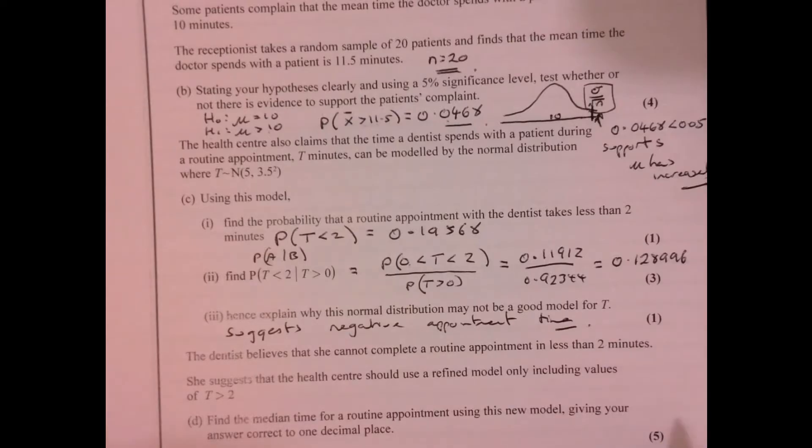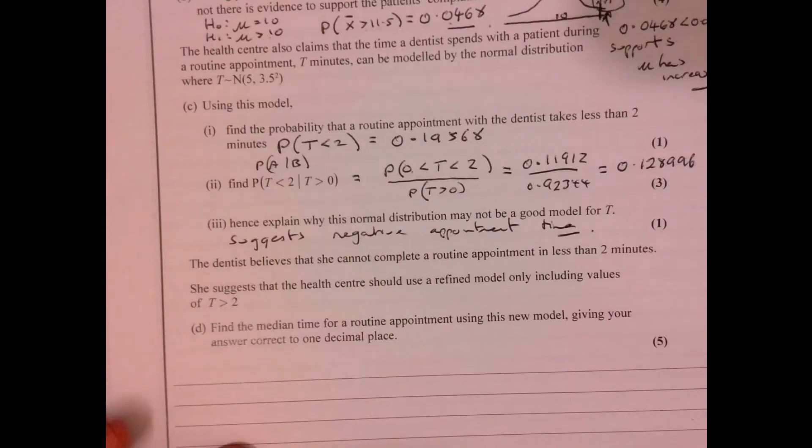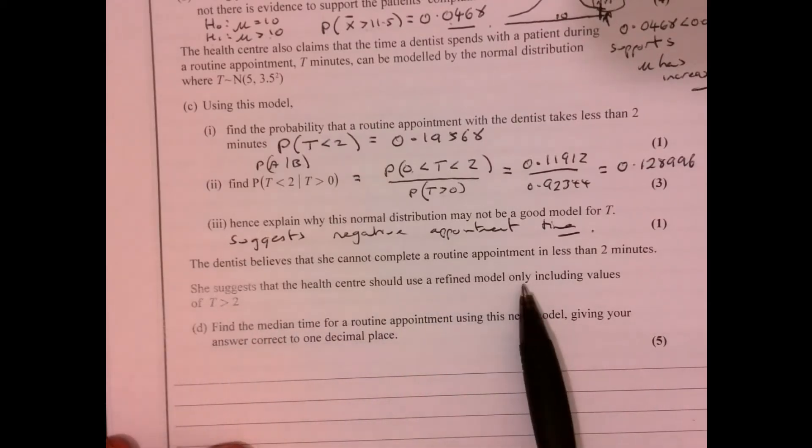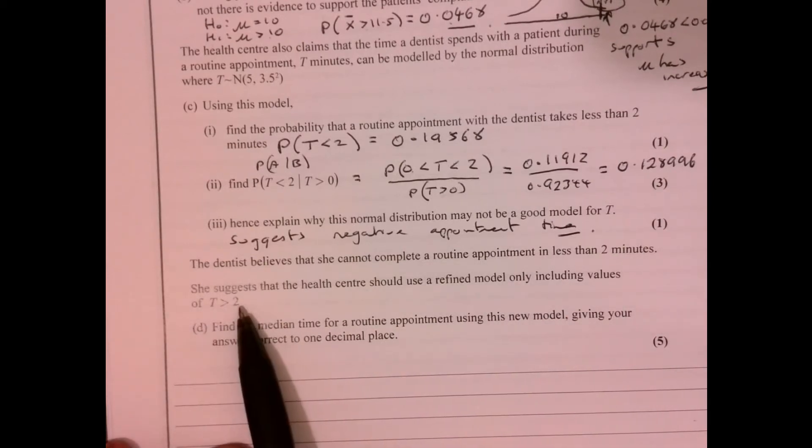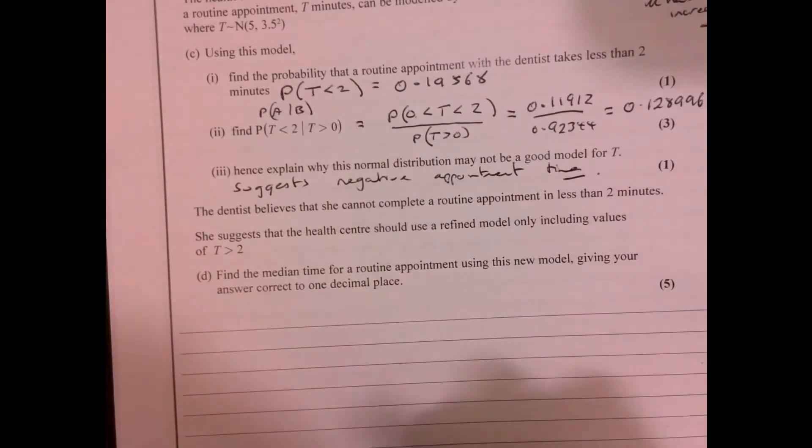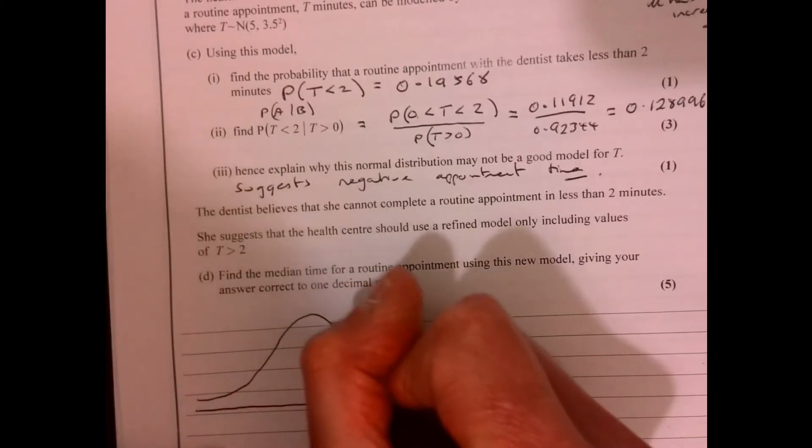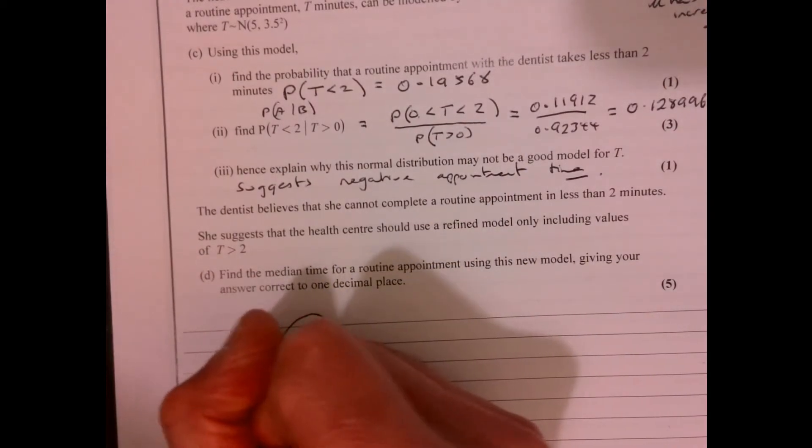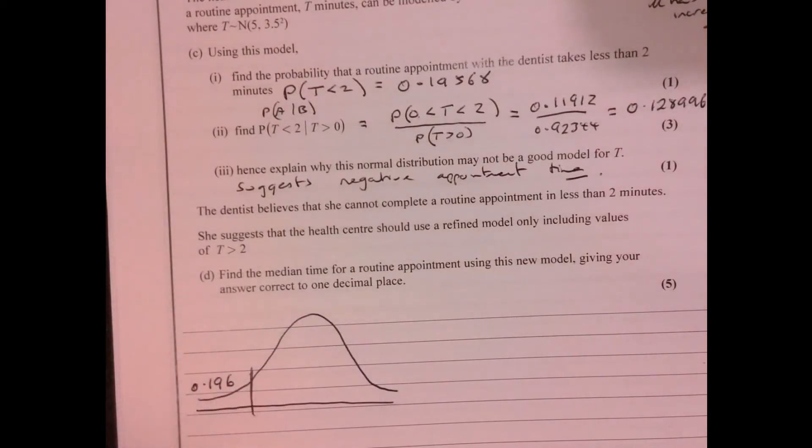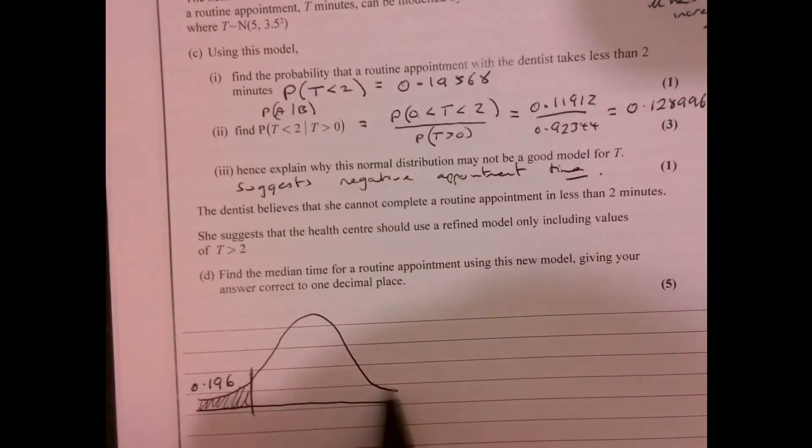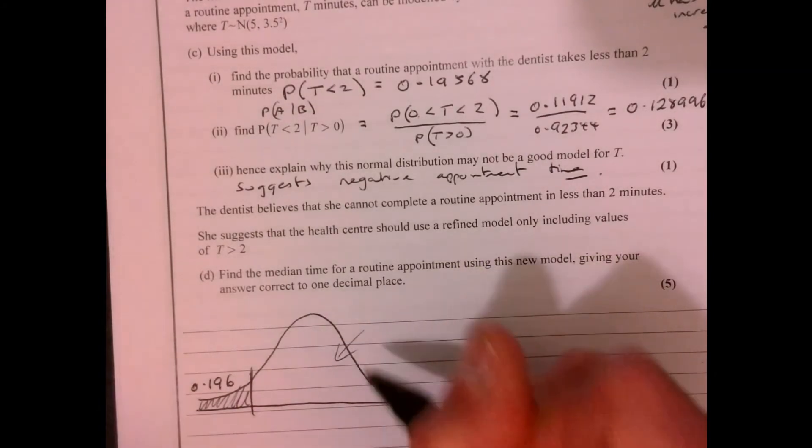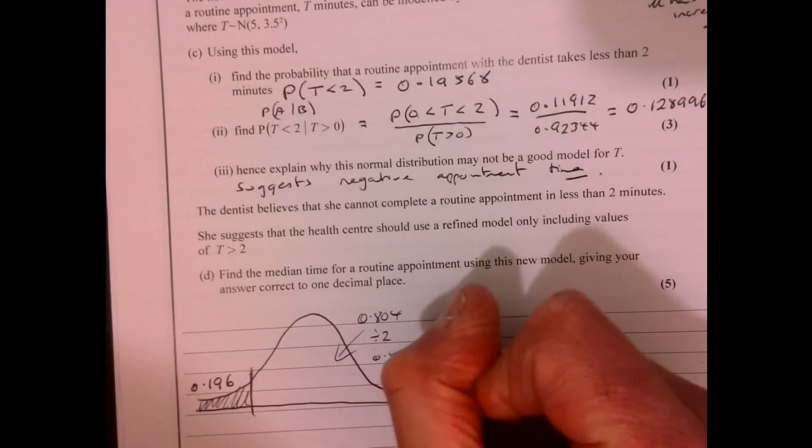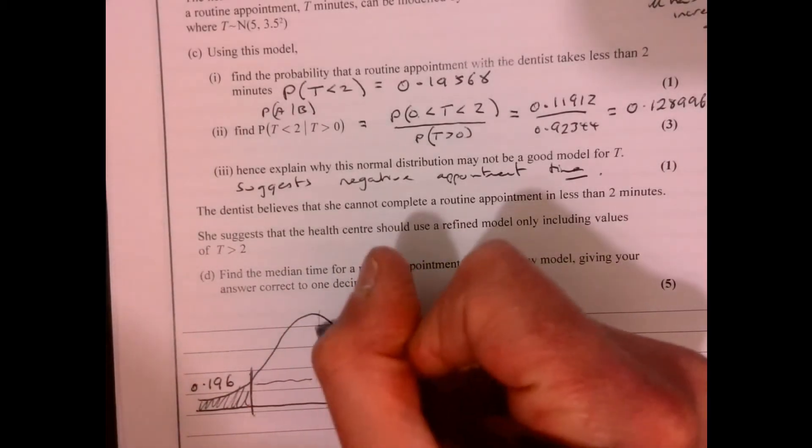Now the last bit of the question. Nice five marks on this bit. So the dentist believes that she cannot complete a routine appointment in less than two minutes. She suggests that the health centre should use a redefined model only including values when t is more than two. So find the new median time. Now, we've already worked out the probability of the time being less than two minutes. So that's that bit in there. If I call that 0.196 would make life a little bit easier. So what we need to do is we need to split the rest of it. So the rest of it together is 0.804. So if we divide that by two, that's 0.402.